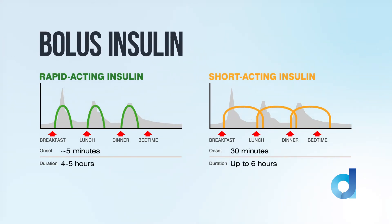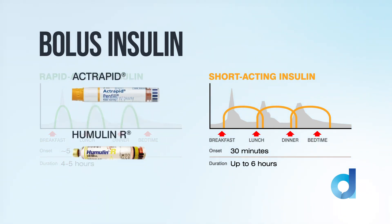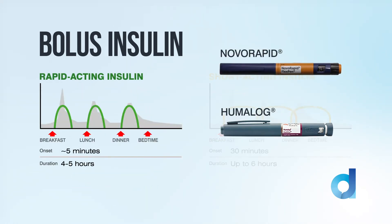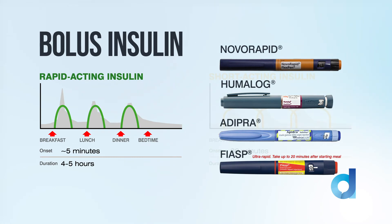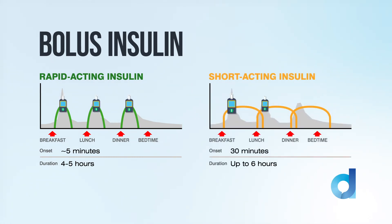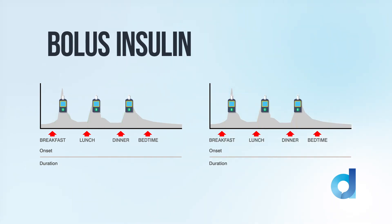The second category is bolus insulins. These are designed to be mealtime insulins. Bolus insulins can be short acting, where they should be given at least half an hour before a meal, or they can be rapid acting, which should be given 5 to 15 minutes before a meal. You can measure the effect of a bolus insulin 2 hours after it is injected, which is when it is at its peak.